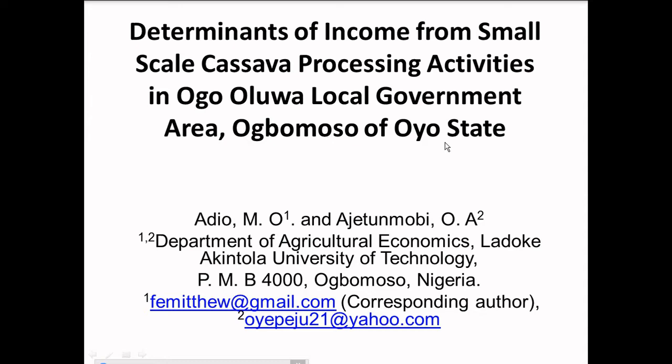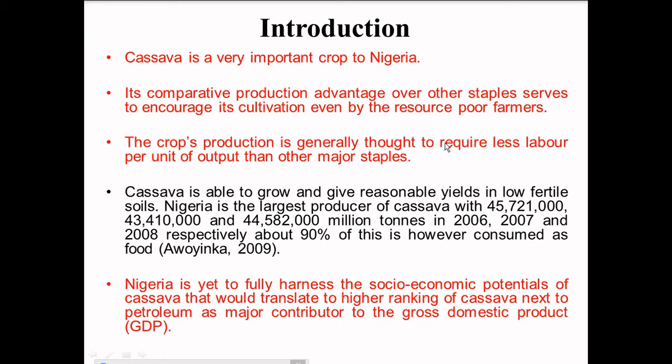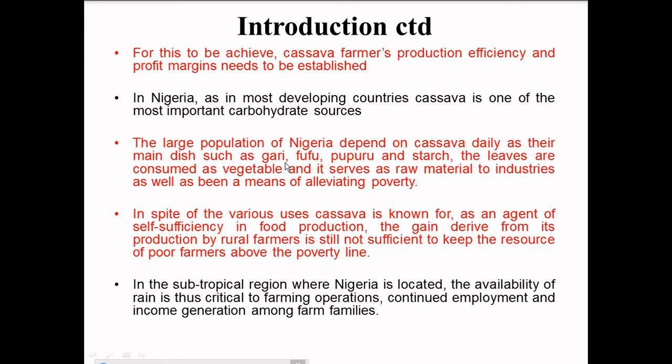Cassava is a very important crop to Nigeria. Its comparative production advantage over other staples serves to encourage its cultivation even by resource-poor farmers. The crop's production is generally thought to require less labor per unit of output than other major staples. A large population of Nigeria depends on cassava daily as their main dish, such as gari, fufu, pupuru and starch. The leaves are consumed as vegetables and it serves as raw material to industry, as well as being a means of alleviating poverty.